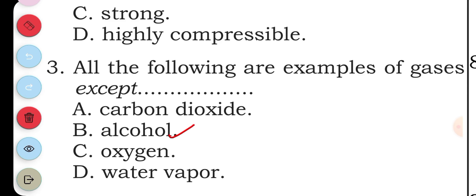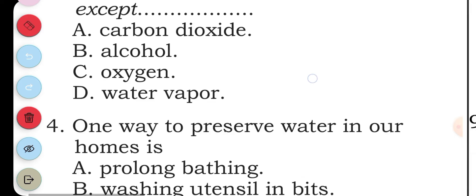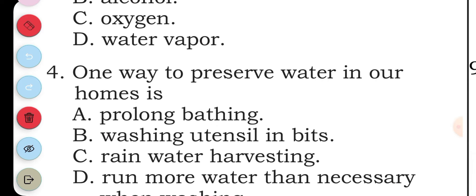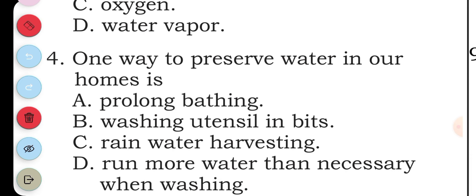B, alcohol. Question four: one way to preserve water in our homes is: A prolong bathing, B washing utensils in bits, C rainwater harvesting, D run more water than necessary when washing.